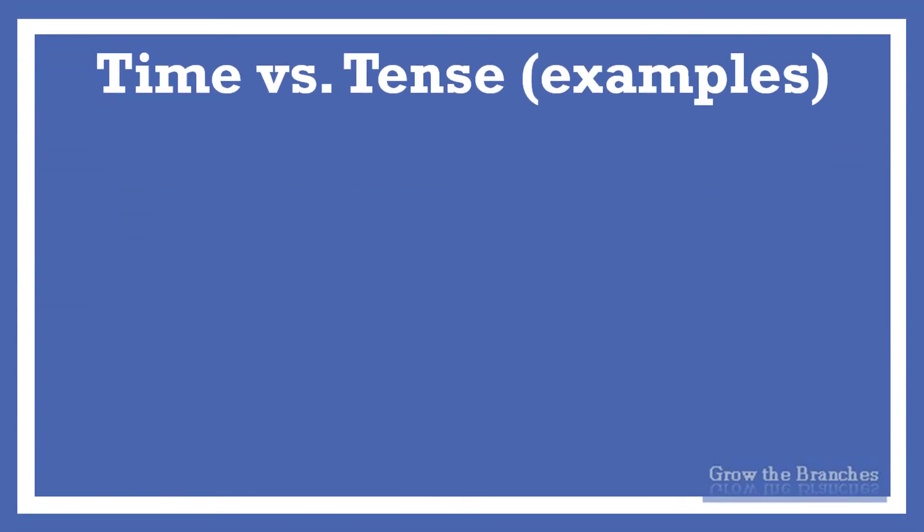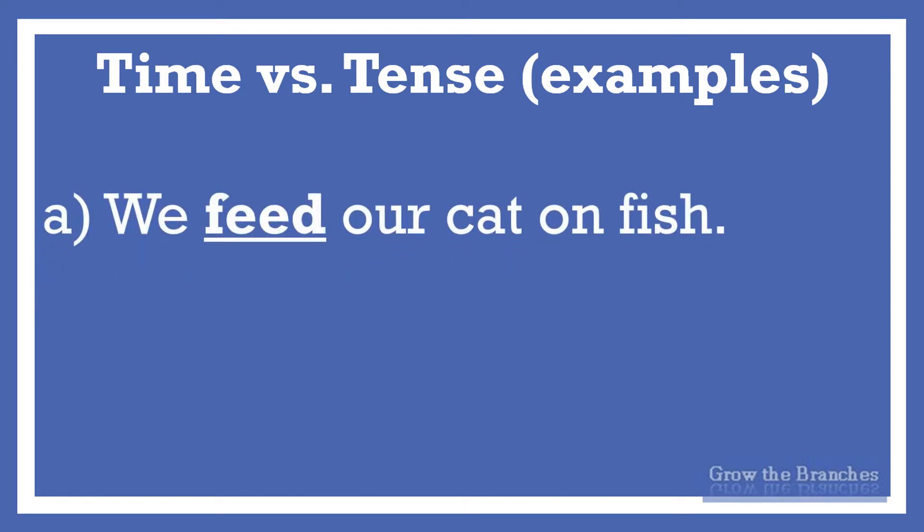Time is universal and tense is the way you conjugate verbs in a language when speaking. For example: 'We feed our cat and fish.' The verb 'feed' is in the simple present tense, but the sentence doesn't mean that the action of feeding takes place only in the present. We fed our cat in the past and we shall feed it in the future. This sentence doesn't indicate present time but a fact — a statement from the past to the present to the future time. So the simple present tense can express actions taking place in the present, the past, and/or the future time.